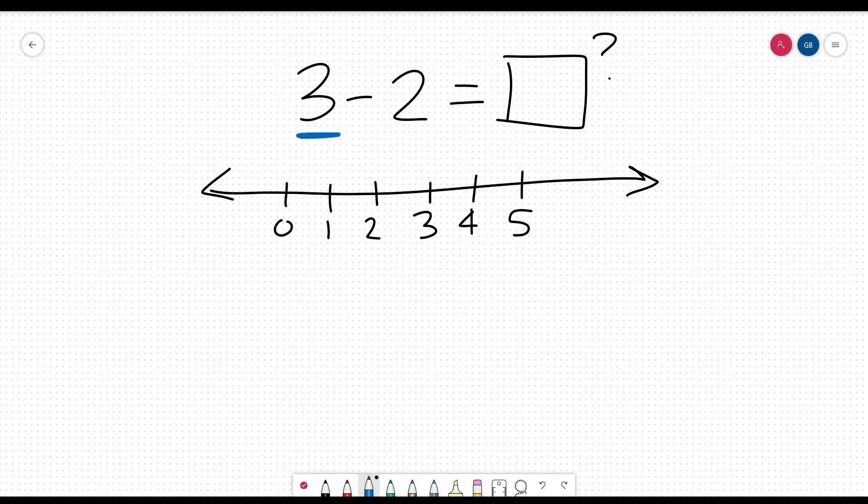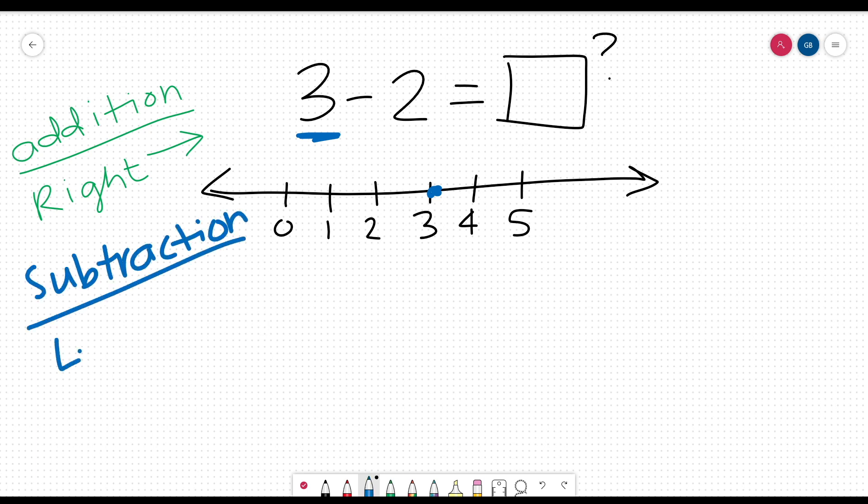The first number in this problem is a 3, so we will mark the number 3 on our number line. When we used a number line for addition, we used to move to the right on the number line. But now that we are doing subtraction, we are going to move to the left on the number line.